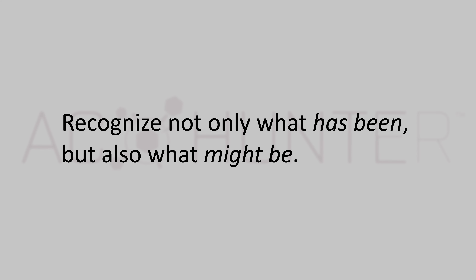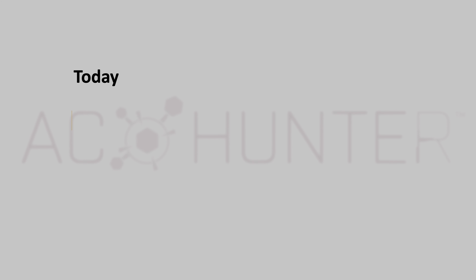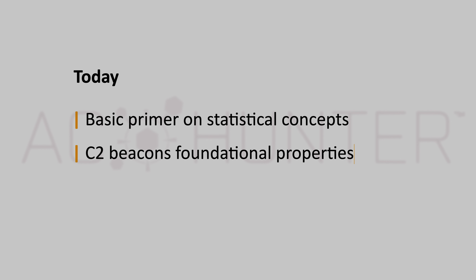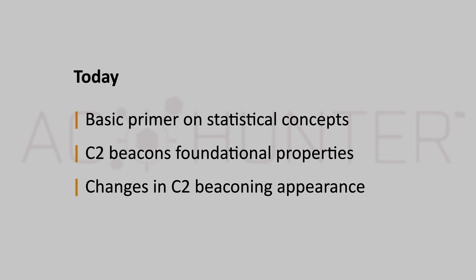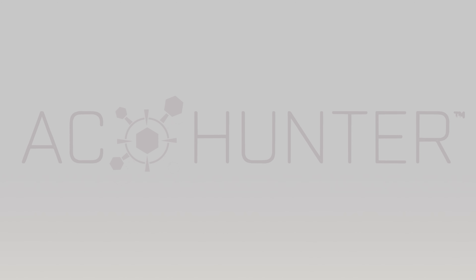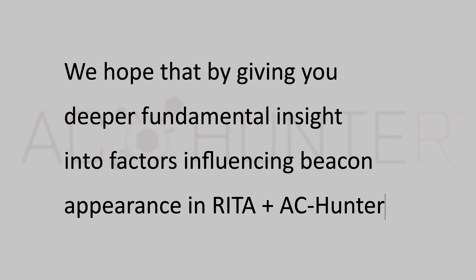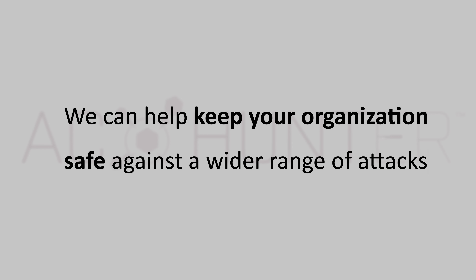To serve this educational strategy, we've decided to break this post into two parts. In part one today, we'll start with a basic primer on statistical concepts central to C2 beaconing behavior, then have a quick discussion on C2 beacons in general and explore their foundational properties. Finally, we'll tie these two sections together by examining how changes in core C2 beaconing behavior affect their statistical properties and consequently their appearance in AC Hunter. In a future lesson, we'll compare today's theoretical findings to actual experimental data in AC Hunter and RITA, to help keep your organization safe against a wider range of possible attacks.